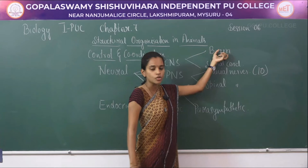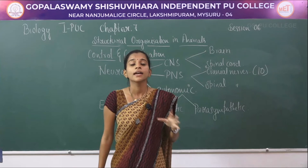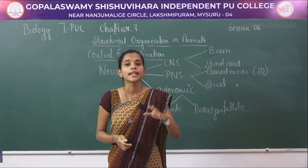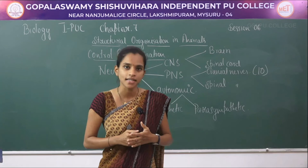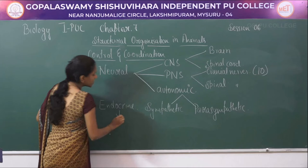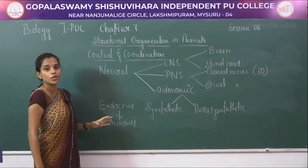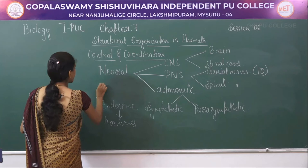Now we will study about the brain, but before that let me give details about endocrine organs. Endocrine glands are ductless glands — they release their chemical secretions directly into the blood, through which they reach the target organs. The chemicals released by endocrine glands are called hormones.